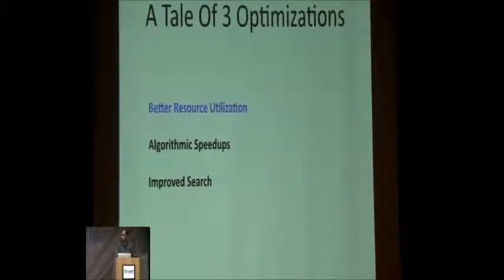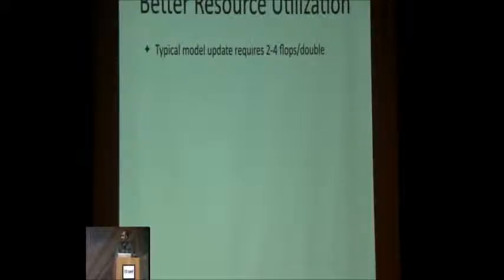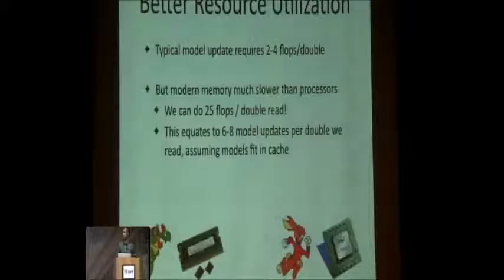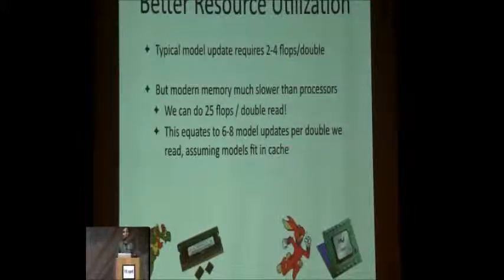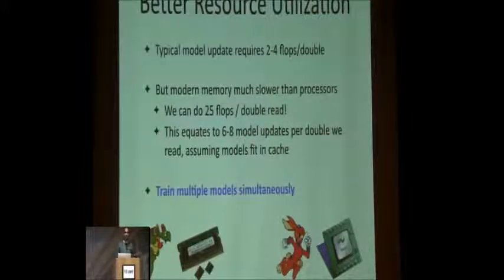For better resource allocation, the intuition is that a model update — say gradient descent — typically involves two to four flops per double, just multiplies and adds. But memory is a lot slower than processing. We can do 25 flops for the cost of reading a single double, but it only takes two to four flops to compute a model update. This equates to six to eight model updates per double, assuming models fit in cache. So the obvious conclusion is: let's try to train multiple models simultaneously.